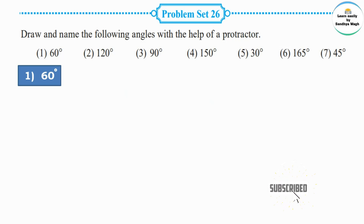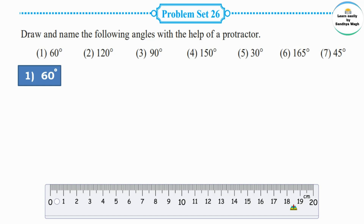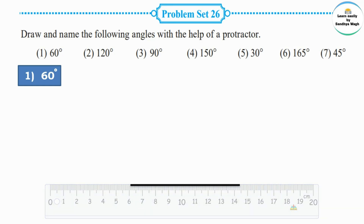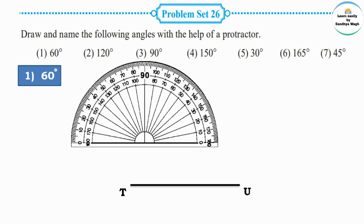The first angle measurement given is 60 degrees. We need to draw a 60 degree angle. First, draw the first arm of the angle using a ruler and give it a name. Since T is the vertex, we must draw a 60 degree angle at this point. For that, we will use a protractor.